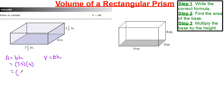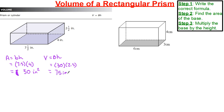7.5 multiplied by 4 gives us a value of 30 inches squared. That is the base. Now we take 30 inches squared and multiply it by 2.5. 30 multiplied by 2.5 gives us a value of 75 inches cubed. This is the answer for the volume of this rectangular prism.